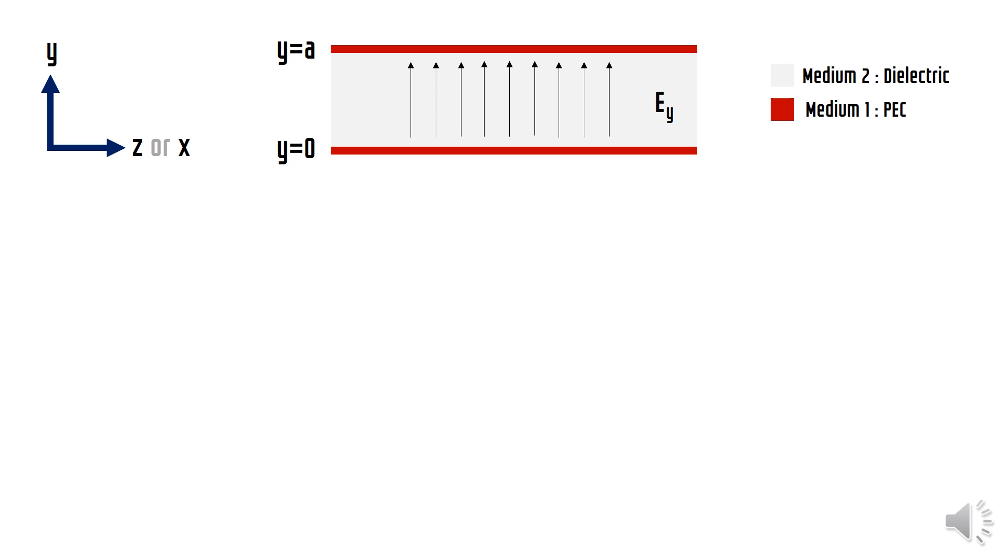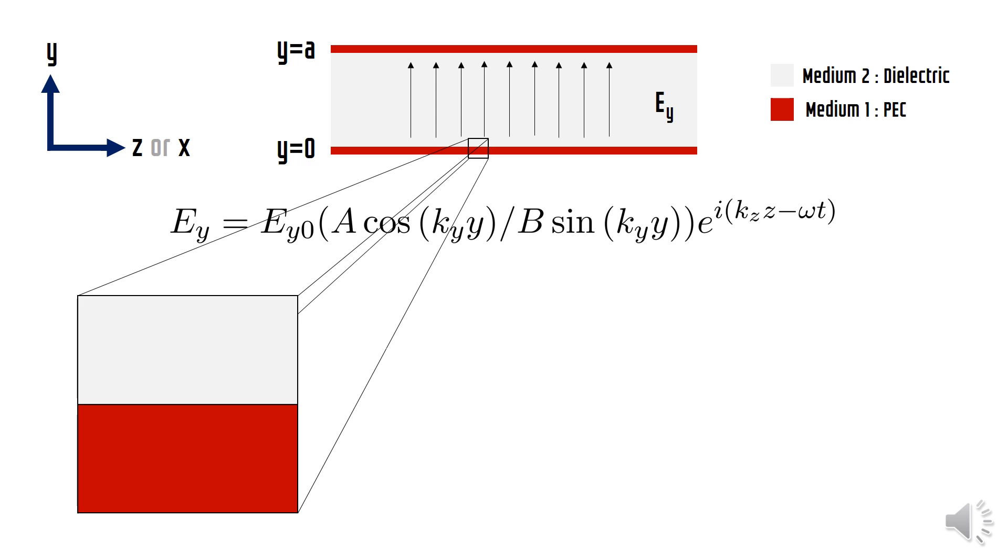Now let us do a similar analysis for Ey. Looking at the given component, we see that Ey is normal or perpendicular to the interface. Again the perpendicular component inside the metal is zero, which means that the electrical displacement D is also zero. There is a charge accumulation on the interface leading to a surface charge density denoted by sigma F. Looking at the boundary condition for normal component.